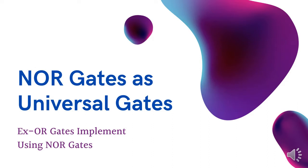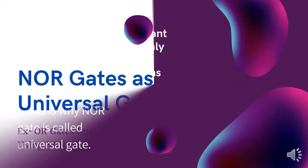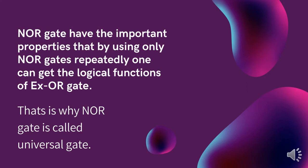In today's lecture we will learn why NOR gate is called universal gate, and how XOR gate is implemented by using NOR gates. NOR gate has the important property that by using only NOR gates repeatedly, one can get the logical functions of XOR gate. That's why NOR gate is called universal gate.